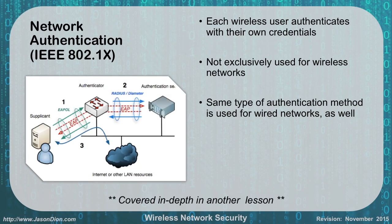Network authentication — this stuff actually does work. IEEE 802.1X, which we talked about earlier with switches, allows each wireless user to authenticate using their own credentials. It's not exclusively for wireless networks — it works with wired networks as well. The supplicant requests access through the authenticator, which is the wireless access point, to gain access to the network. You'll typically use TACACS and RADIUS for this, and it provides encrypted communications between your client and your switch or access point.